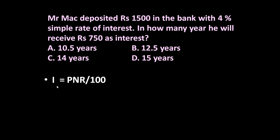The formula for simple interest is: I = PNR / 100. Here, I is the interest, P is the principal, N is the number of years, and R is the rate of interest.